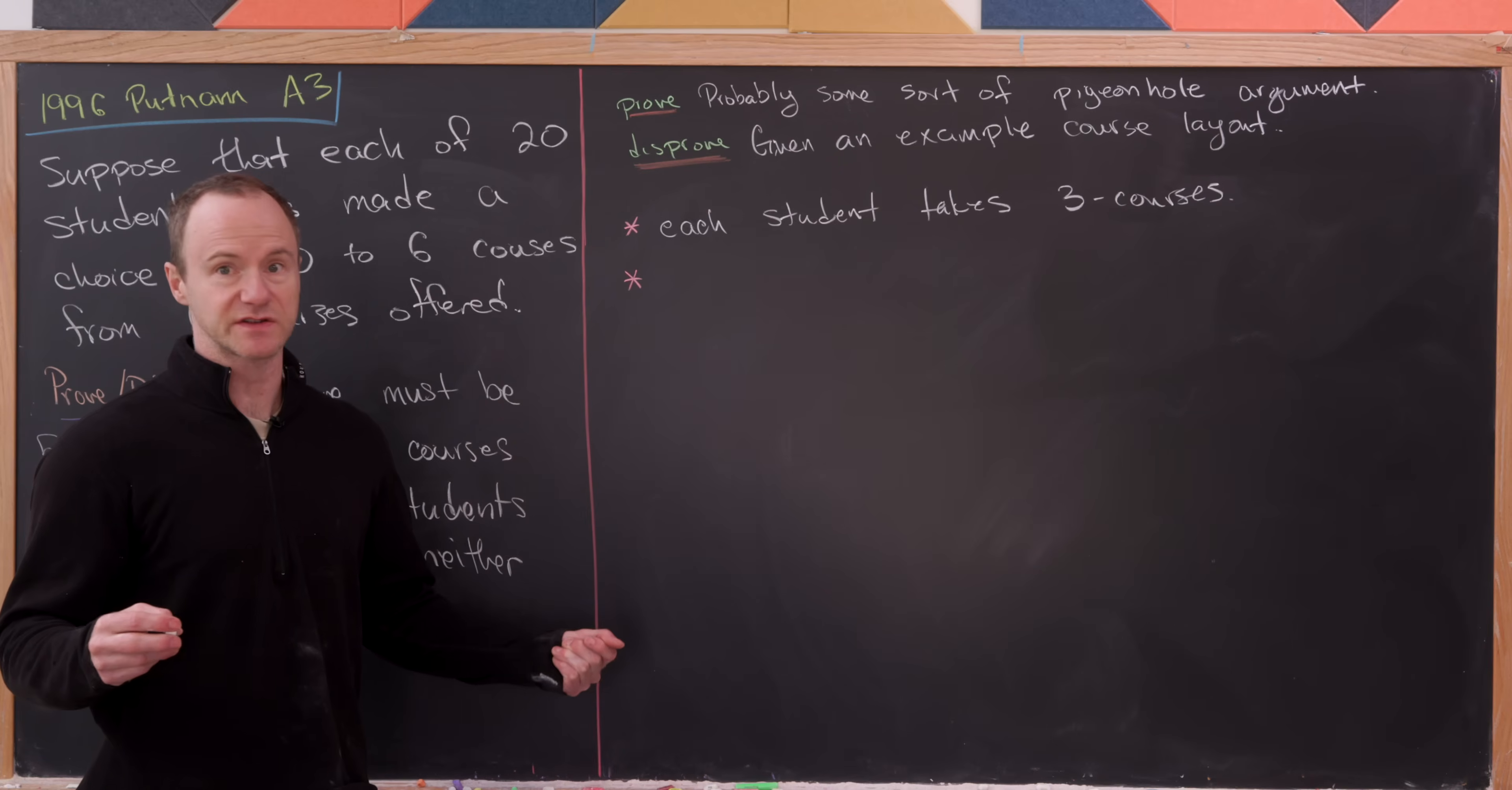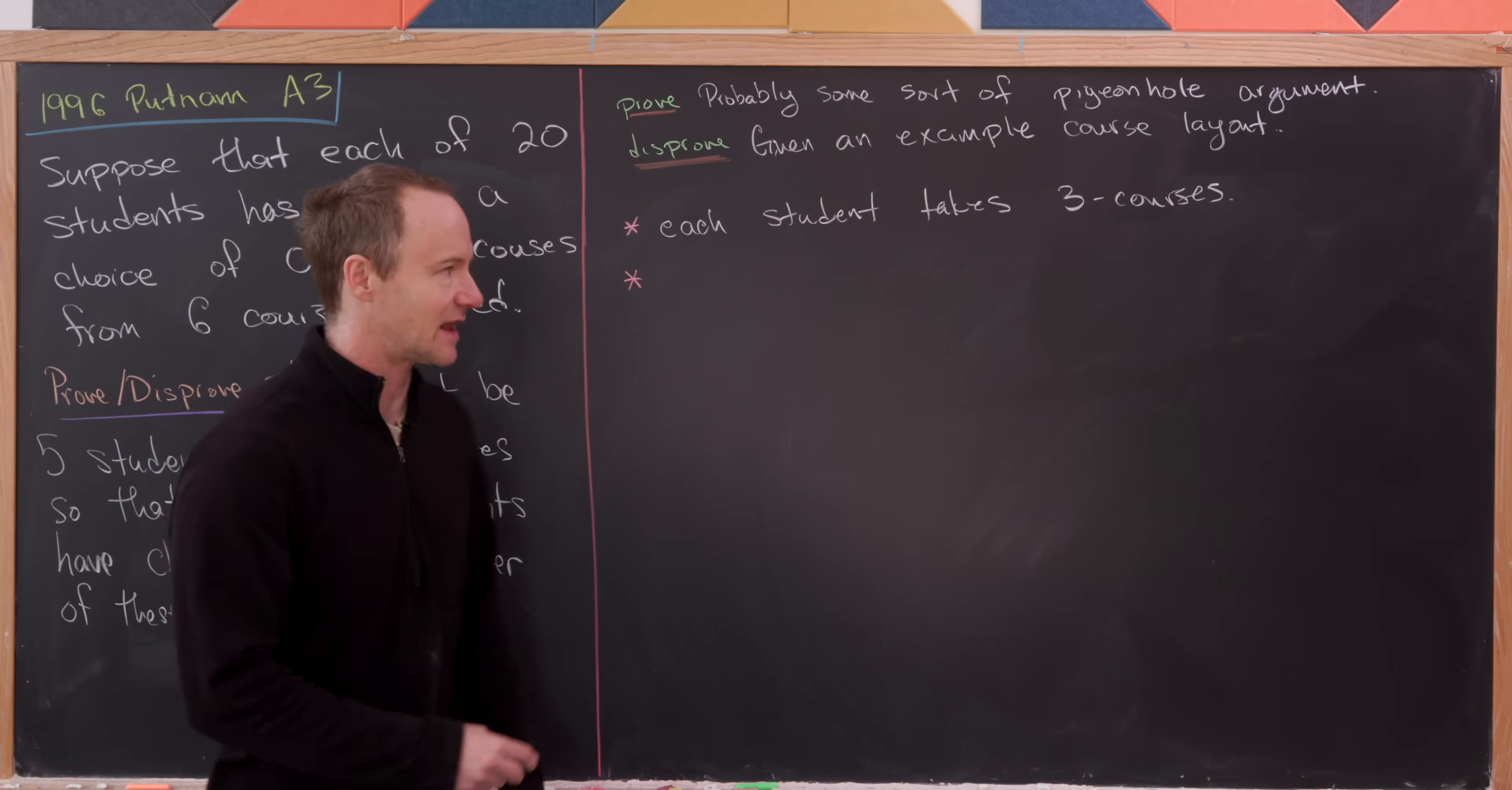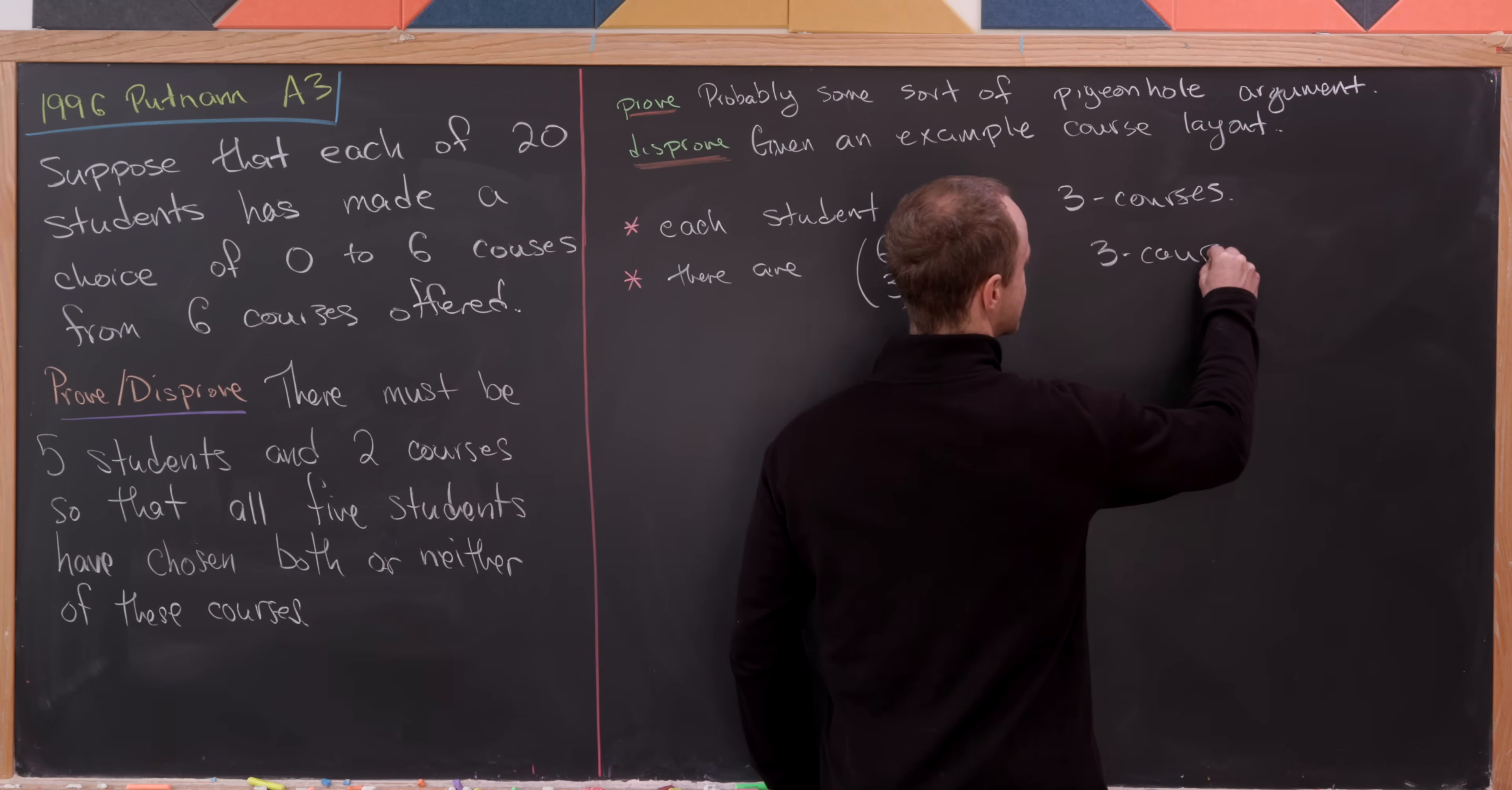Well, definitely there's a number for that. And that number is a binomial coefficient. So we've got six courses. We're choosing three of them. That's the same thing as taking a three-element subset of a six-element set. So there are 6-choose-3, three-course schedules.